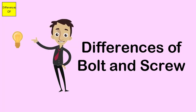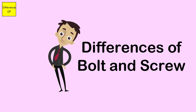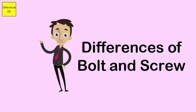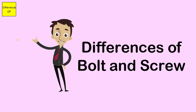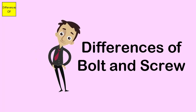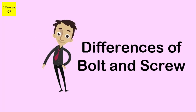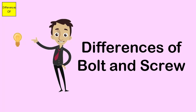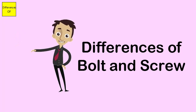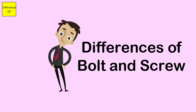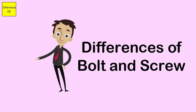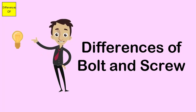A screw is turned when being used and tightened, while a bolt is held still while the nut is being turned. A screw is used in joining materials that do not have existing holes, while a bolt is used to join together materials that already have holes. A screw is smaller in size, and a bolt is larger in size.